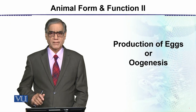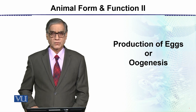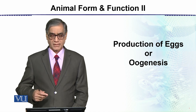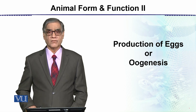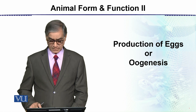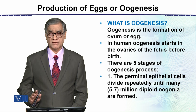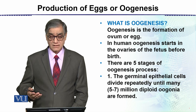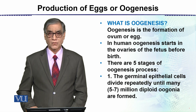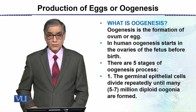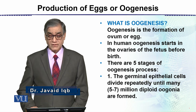Our main topic is animal form and function, and this sub-topic is reproduction. We are discussing oogenesis — 'genesis' means formation — so what is oogenesis? It is the formation of eggs or ova. In human oogenesis, this process starts in the ovaries of the fetus.